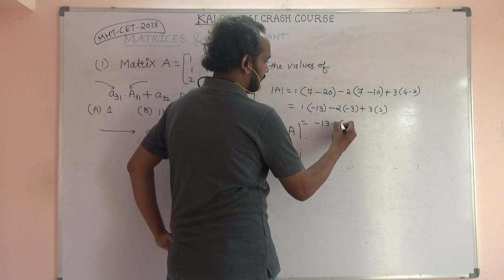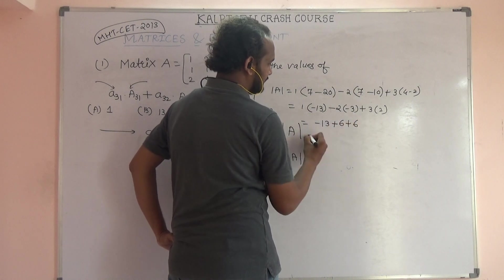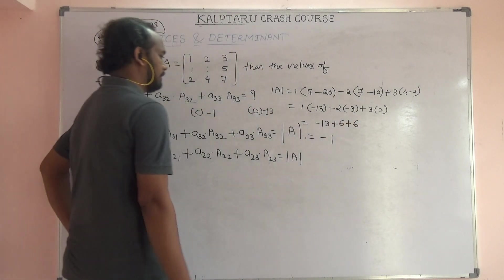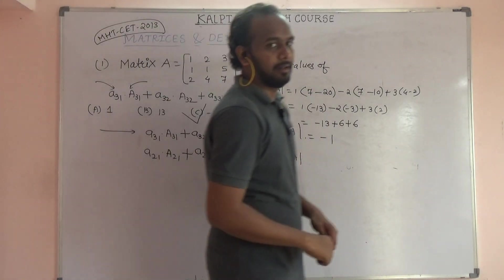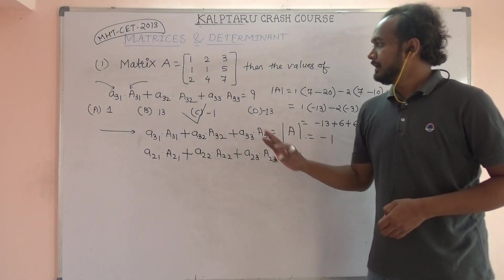That is minus 13 plus 6 plus 6, and it will come to minus 1. So option C is the correct answer.